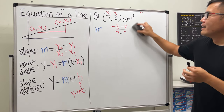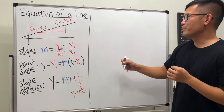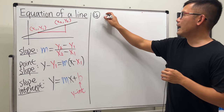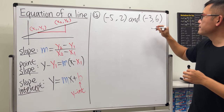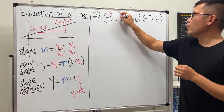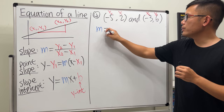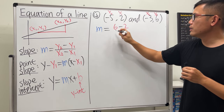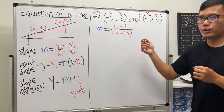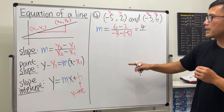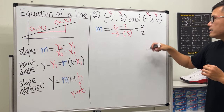Example 4 (bonus): find the equation through (−5, 2) and (−3, 6). Label x1 = −5, y1 = 2, x2 = −3, y2 = 6. Slope: m = (6 − 2)/(−3 − (−5)) = 4/(−3 + 5) = 4/2 = 2.